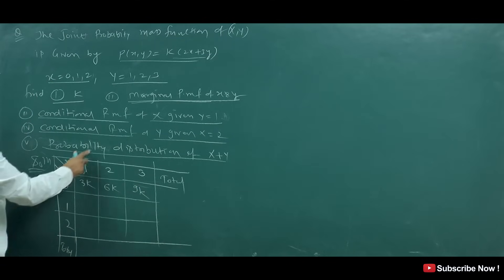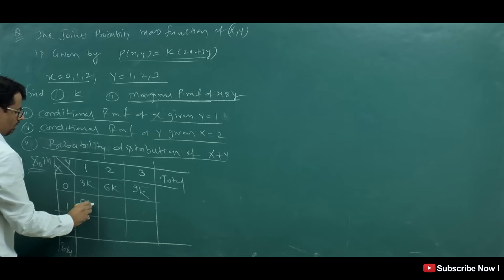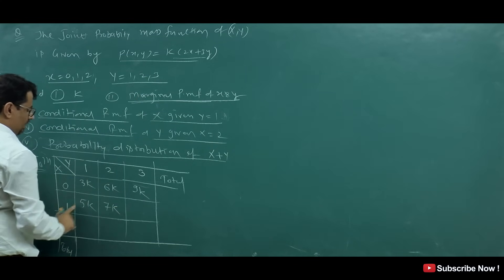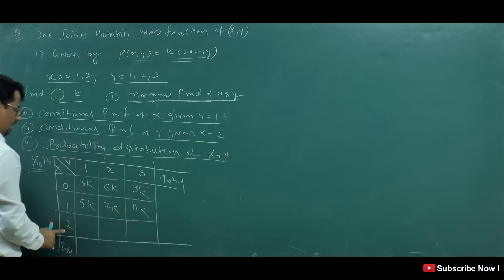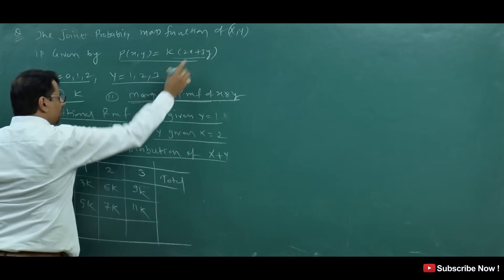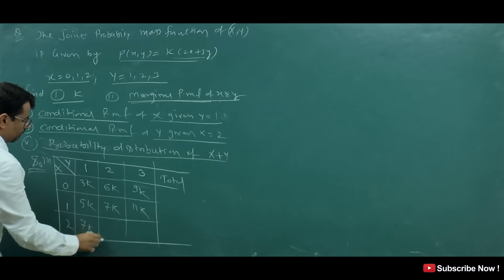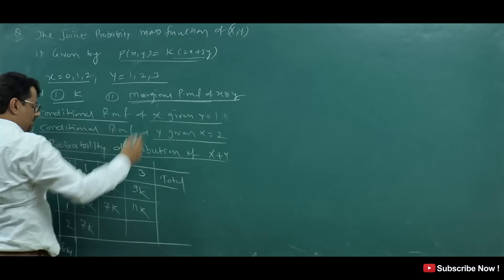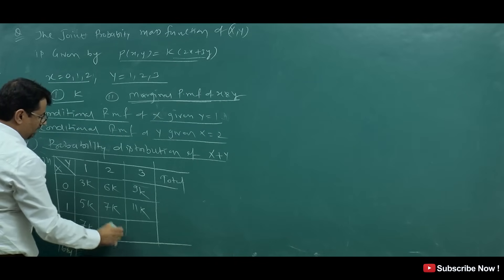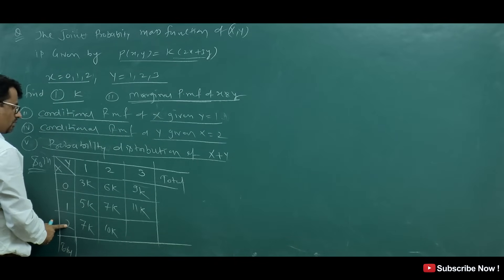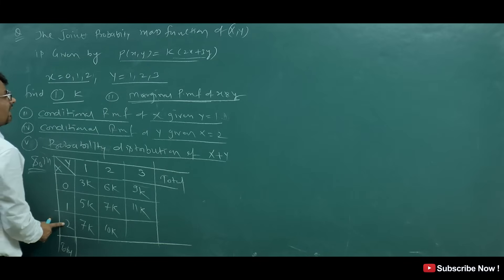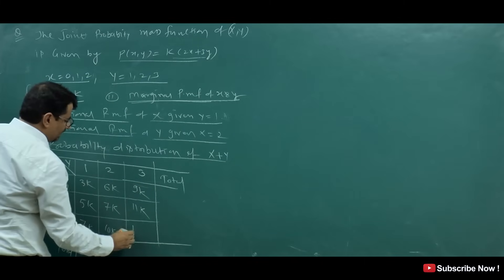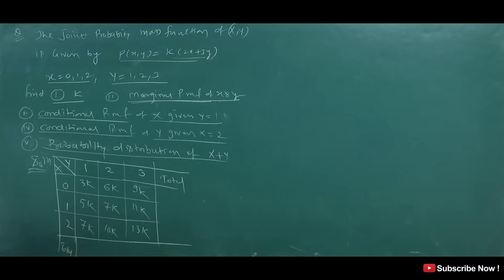For Y value 1: we get 4 and 3, that is 7K. Then 1 and 3 gives 9 plus 2, so 11K. Then 2 and 1: 4 and 3, that is 7K. For Y value 2: 4 and 2 gives 6, and 6 and 4 is 10K. Then for Y value 3: 4 and 9 gives 13K. So this table is complete.